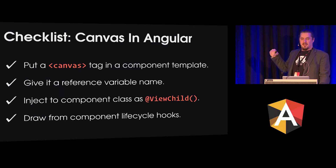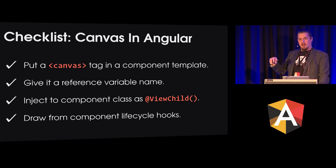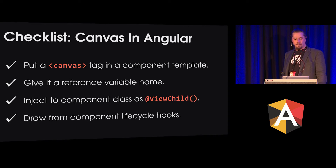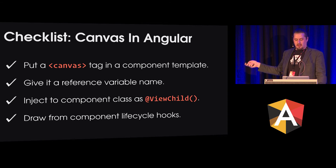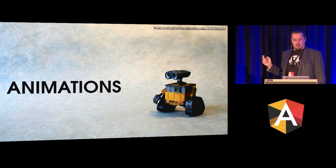Canvas is not quite as natural as SVG because there's no markup you can use in templates, but you can still put one inside a component and draw on it from the component class's lifecycle hooks. Now let's talk about how to make these things move, because motion is very important in applications these days.